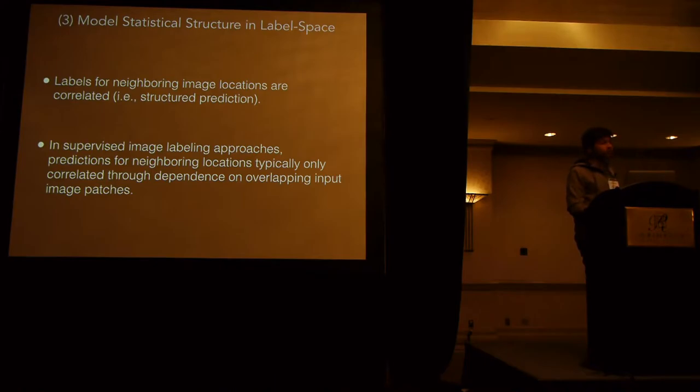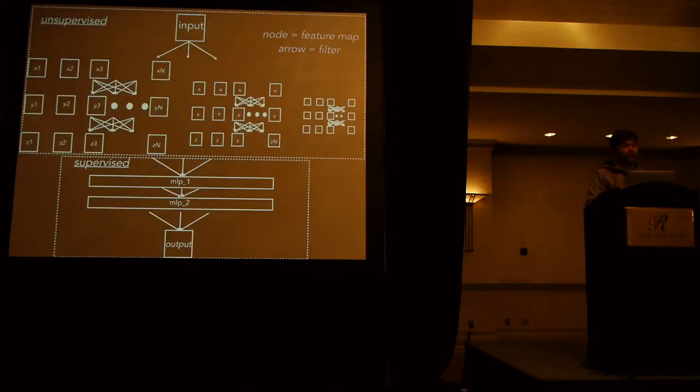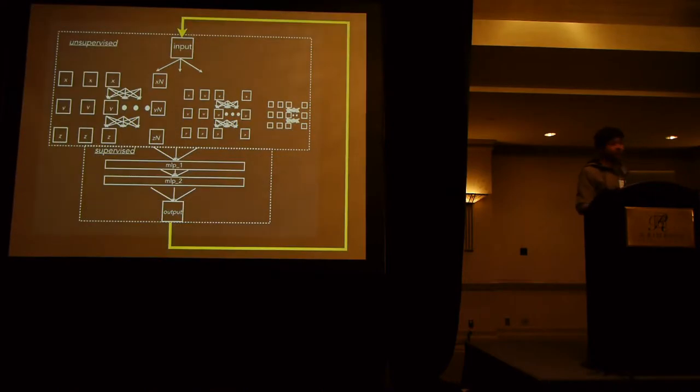So more concretely, labels for neighboring image locations are correlated. So it's really a structured prediction problem. And in most of our approaches, we're really making these predictions more or less independently. They're only correlated through the image. So an obvious way to go is to define some sort of MRF over the images or the predictions that we're making and clean them up that way. We did a lot of work showing that there's some issues with doing this effectively. I'm not going to go into those arguments, but we're just going to do something different. We're going to take our architecture and just add a new pathway. We're going to take our output and connect it to our input.